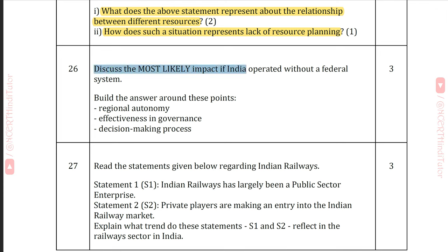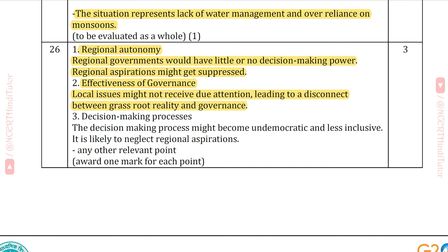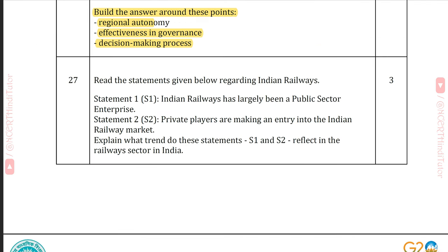Question 26: Discuss the most likely impact if India operated without a federal system, around the points of regional autonomy, effectiveness in governance, and decision-making process. Answer: Regional autonomy — regional governments would have little or no decision-making power, and regional aspirations might get suppressed. Effectiveness of governance — local issues might not receive due attention, leading to a disconnect between grassroot reality and governance. Decision-making process — it might become undemocratic and less inclusive, likely neglecting regional aspirations.